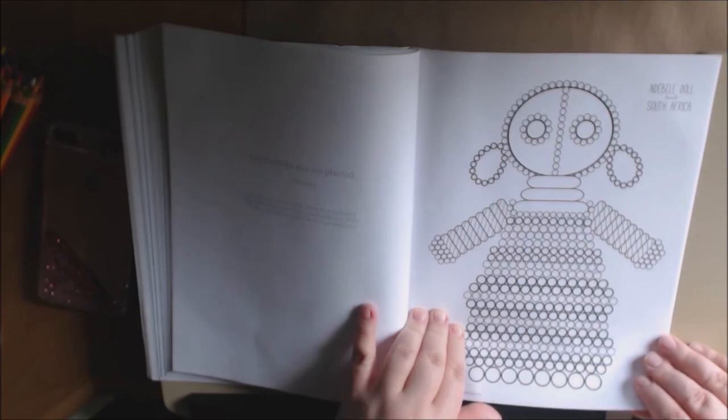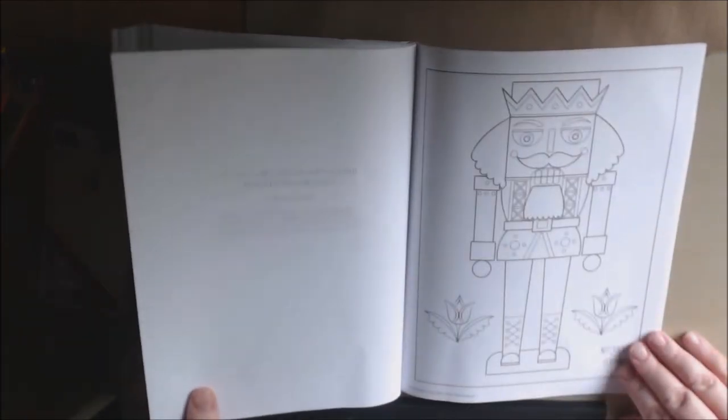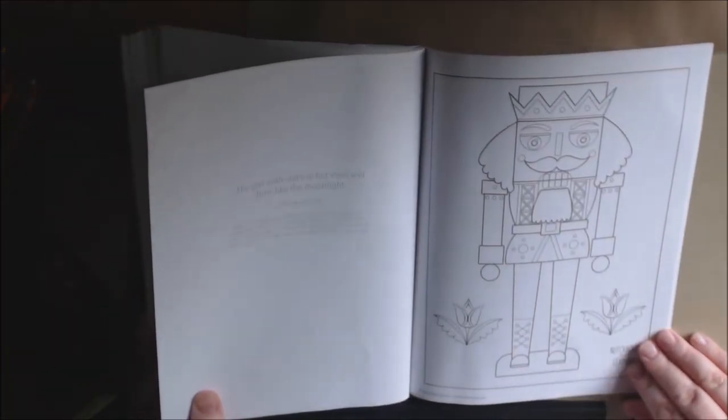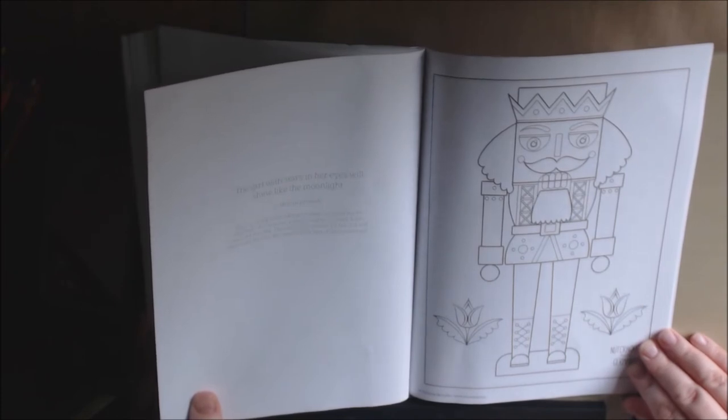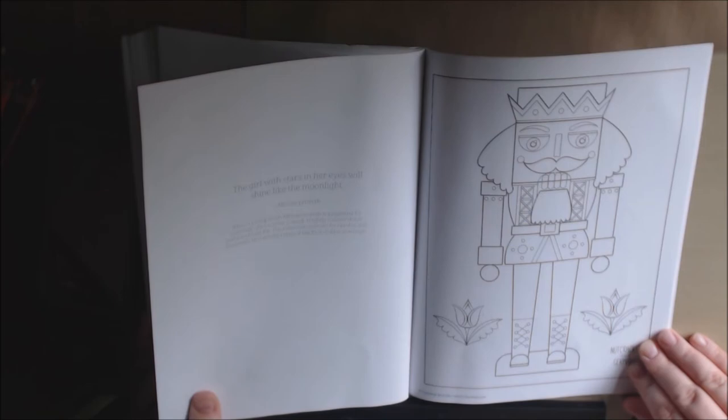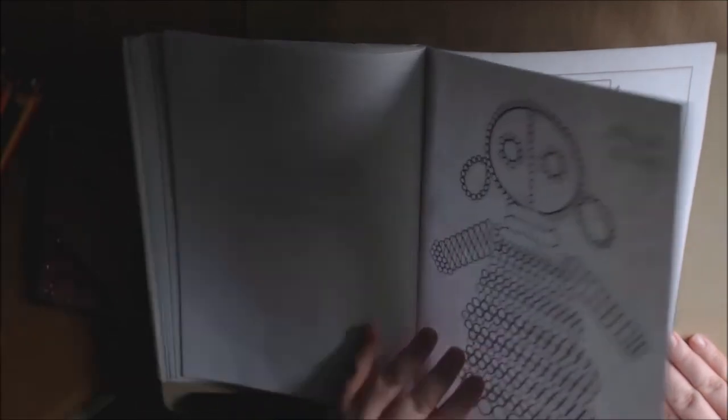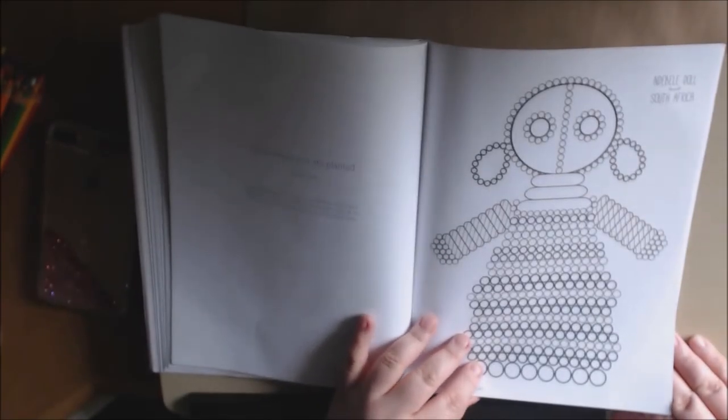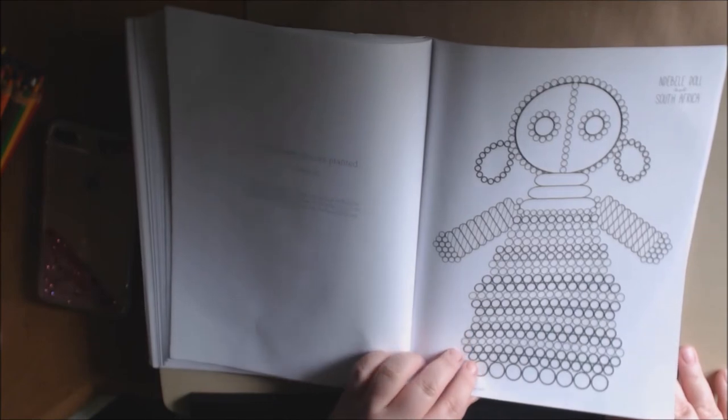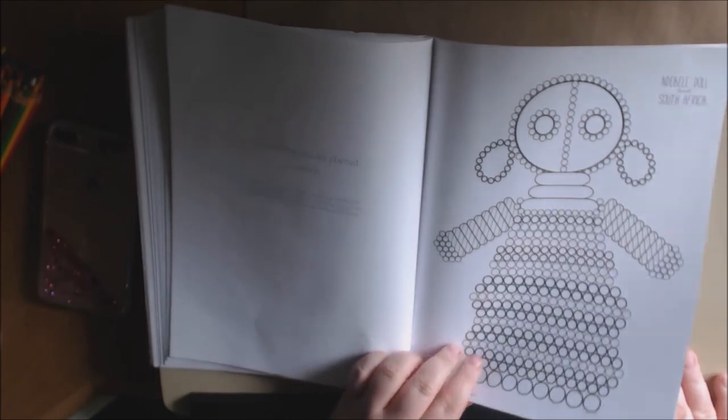Ndebele doll from South Africa. The girl with the stars in her eyes: when a young South African woman is preparing for marriage, she receives a small brightly colored doll to name and care for. The name she chooses for her doll will eventually become the name of her first child in marriage. Wow, this is a really cool book.